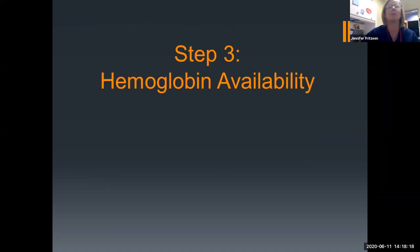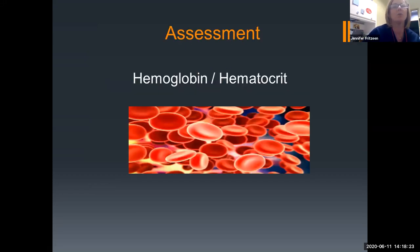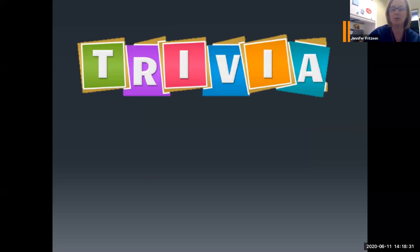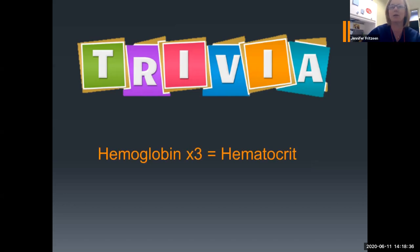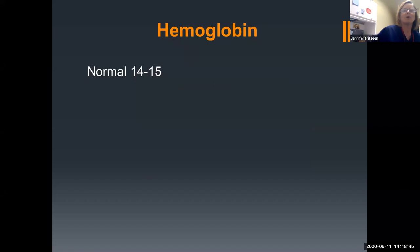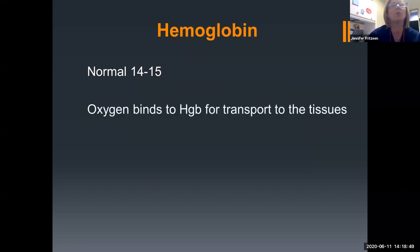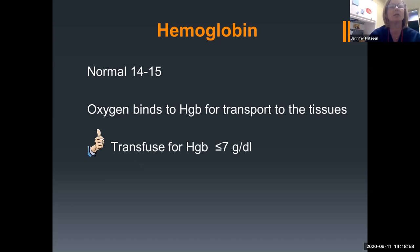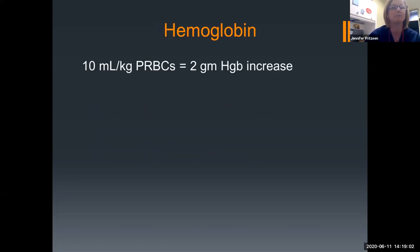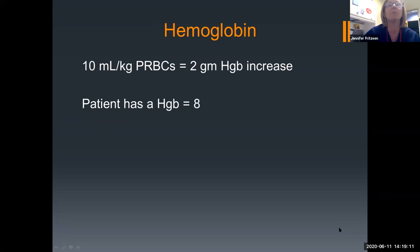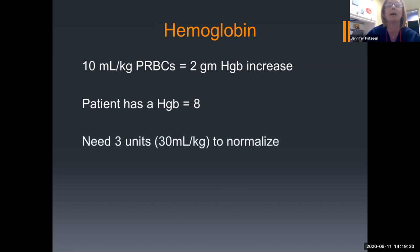Our next step is hemoglobin availability. We can't oxygenate our tissues unless we have the hemoglobin that's going to carry our oxygen. We look at our H&H levels. A little trivia: if you take your hemoglobin and multiply it by three, that's what your hematocrit is. A normal hemoglobin we'll say is 14 to 15. We need that hemoglobin for oxygen to bind onto and be transported to the tissues. The rule of thumb is to transfuse for a hemoglobin of less than or equal to seven. A 10 mL per kilo dose of packed red cells should increase my hemoglobin by two.